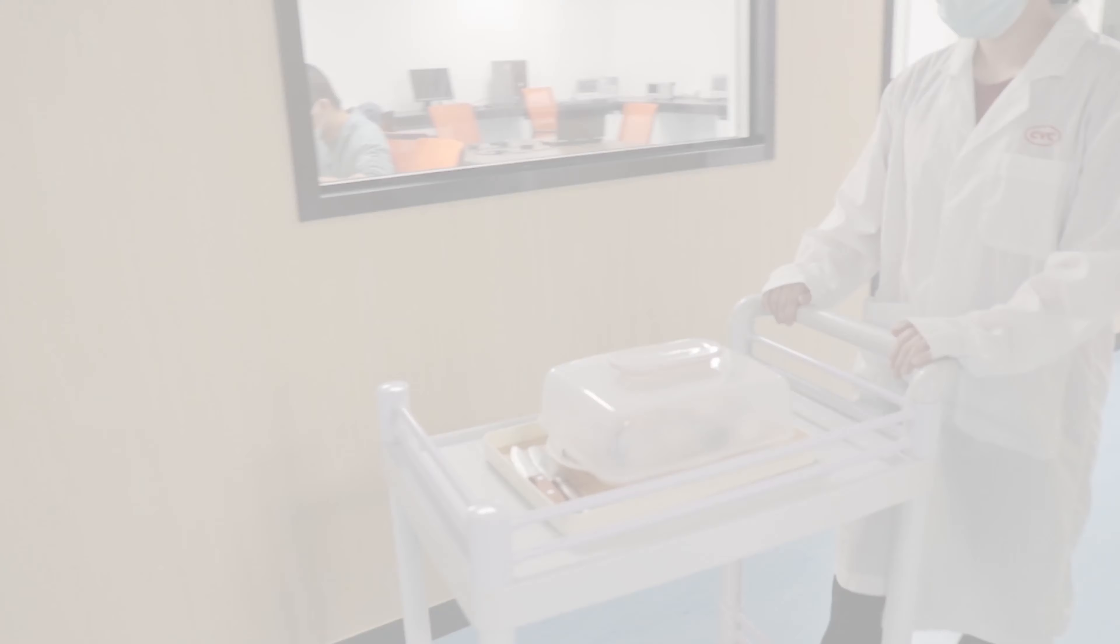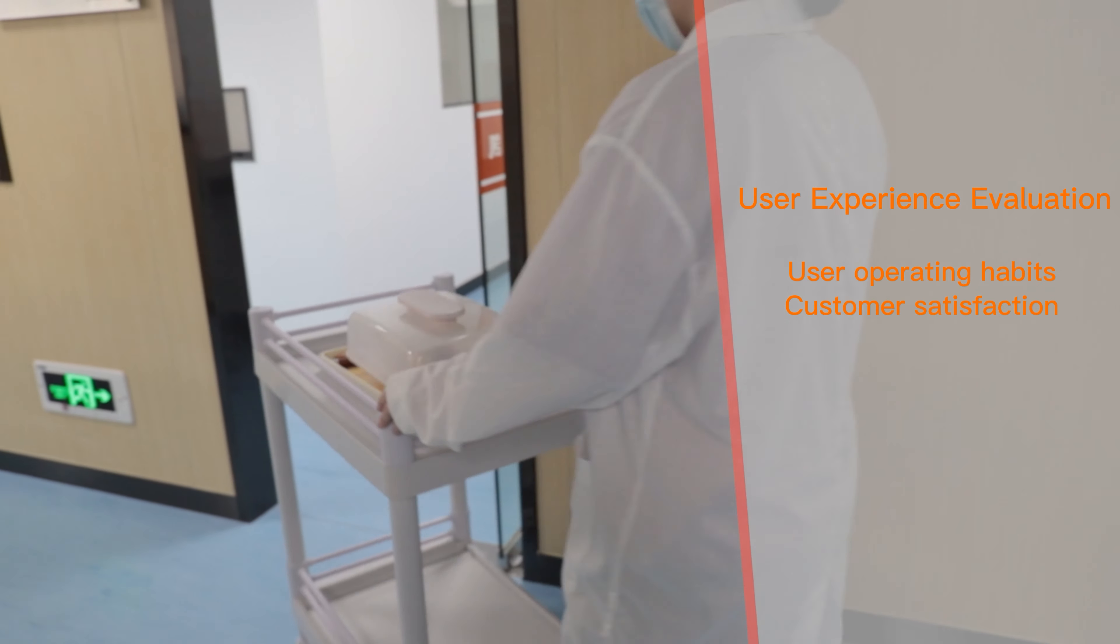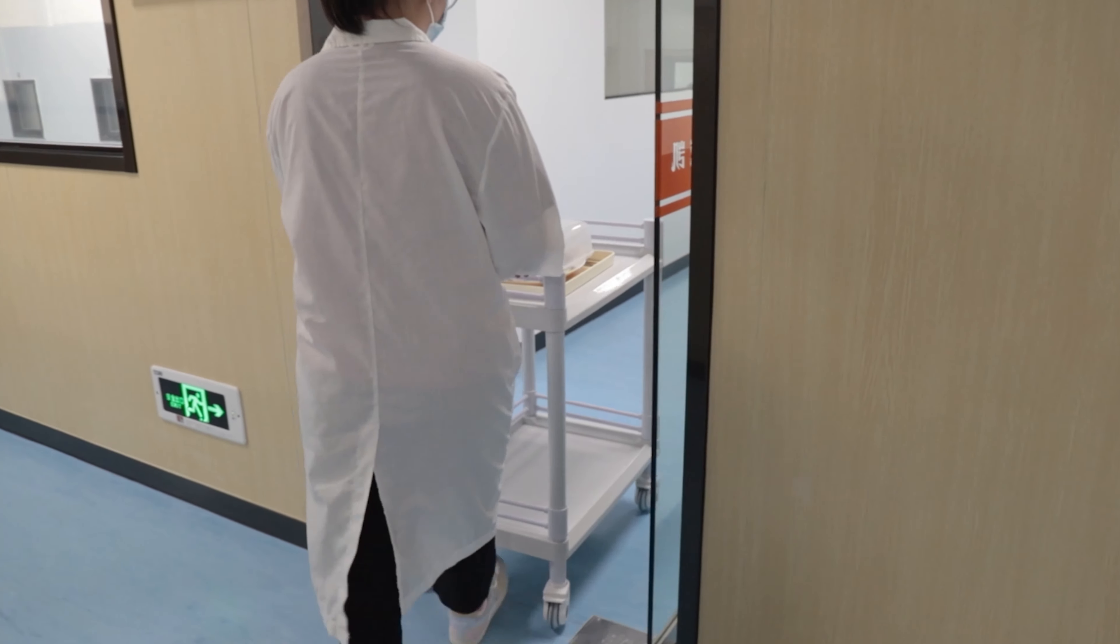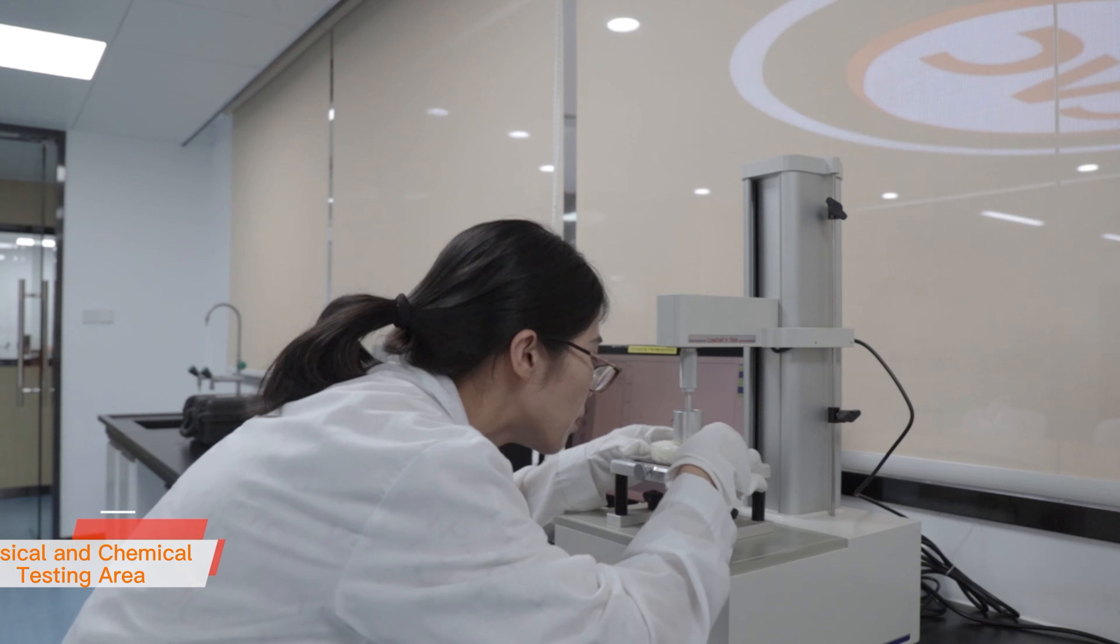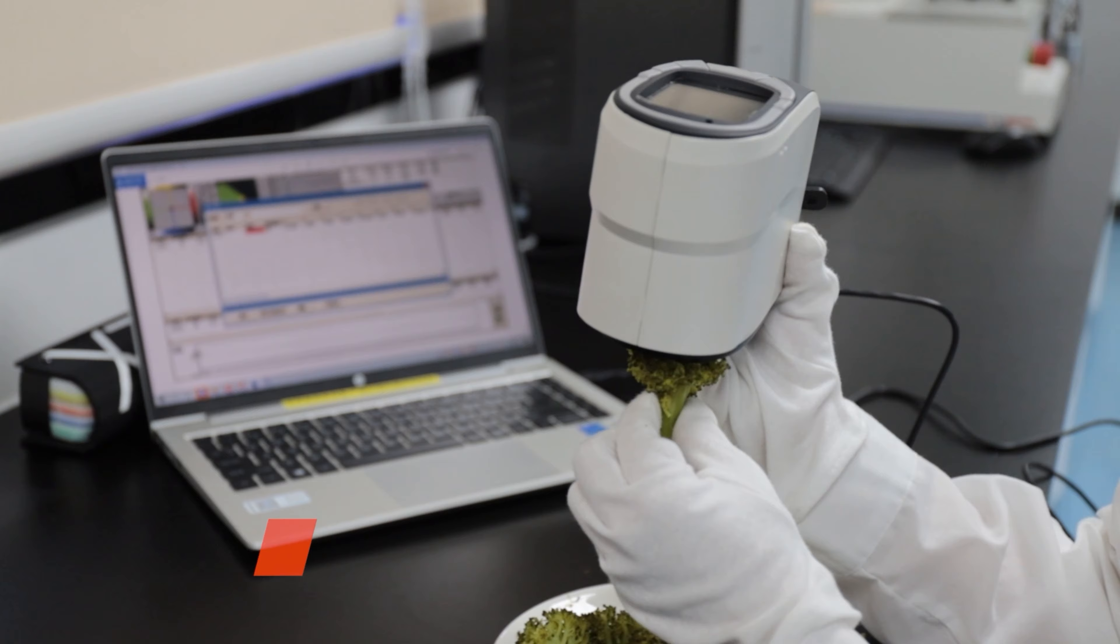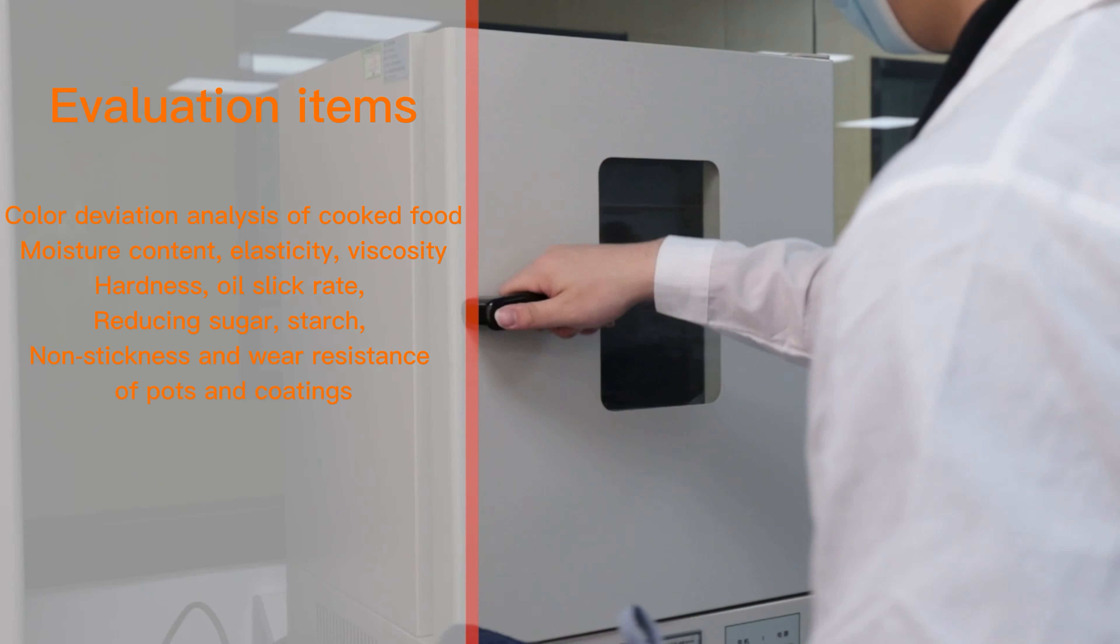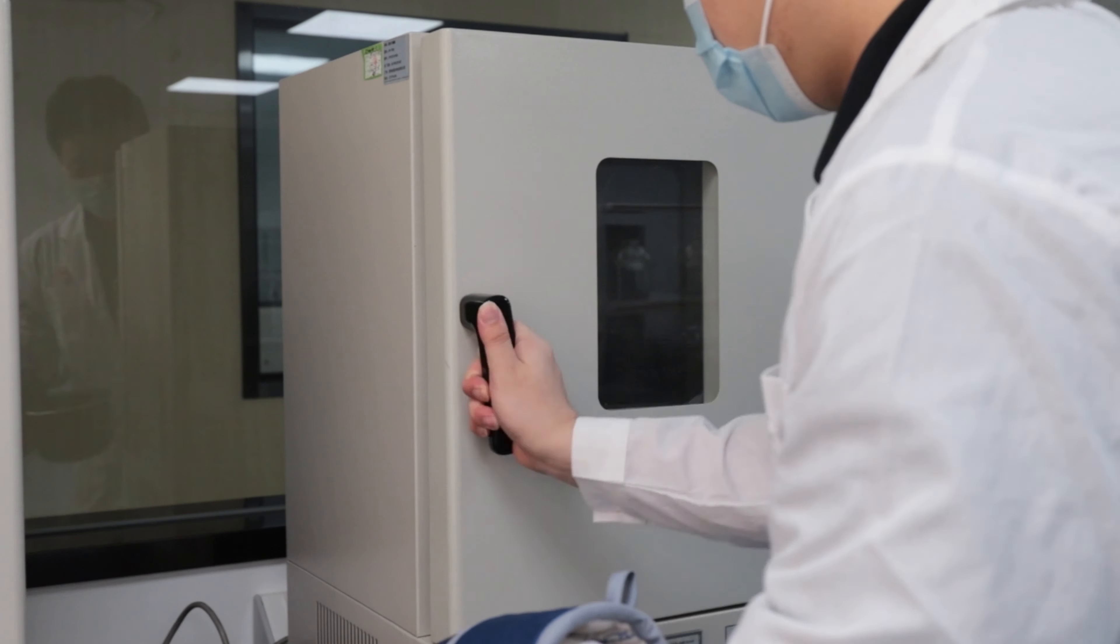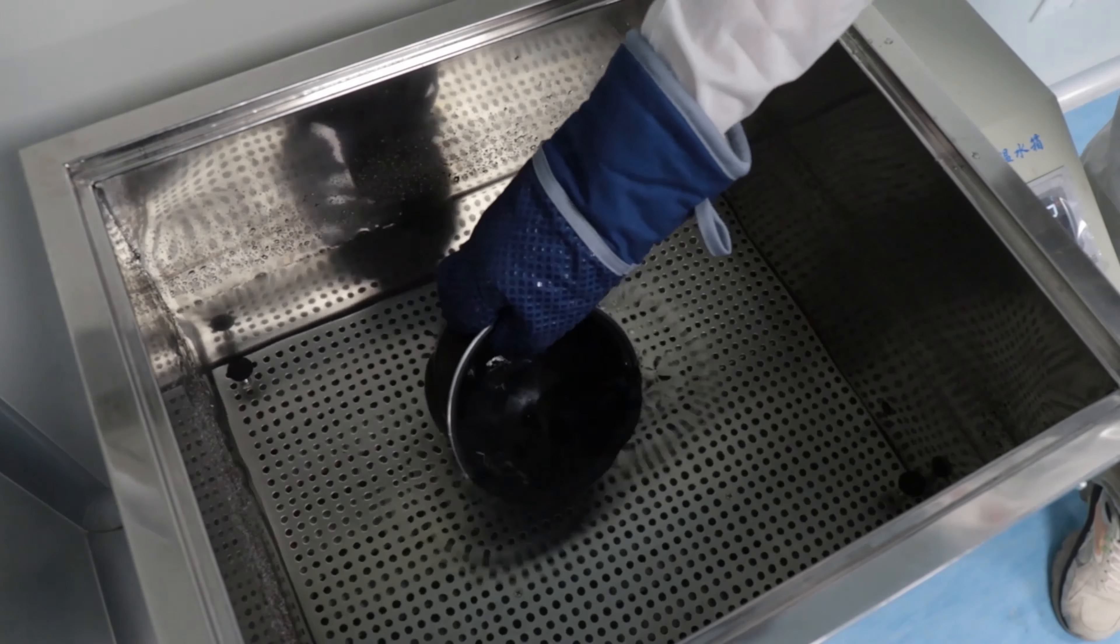After the food is cooked, it will be delivered to the physical and chemical testing area where properties of the cooked food and pot coating will be tested and analyzed.